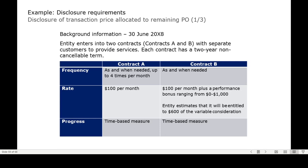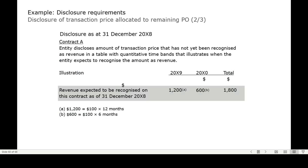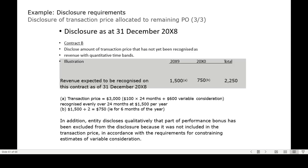In this example, an entity enters into two contracts, A and B, with separate customers to provide services. Both are two-year, non-cancellable contracts. Contract A is $100 per month, and Contract B is $100 per month plus a performance bonus ranging from $0 to $100,000, with an estimated variable consideration of $600. For Contract A, the entity must disclose the transaction price not yet recognized as revenue. The total recognized is $1,200, and six months into 2020 the total becomes $1,800.